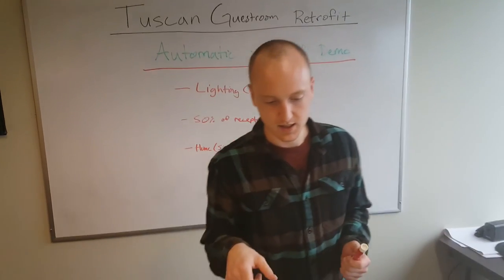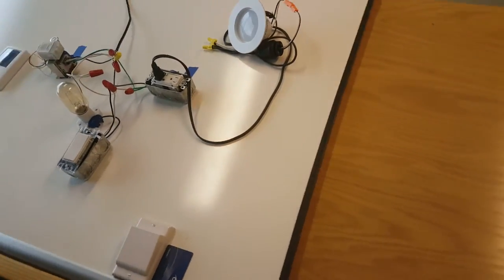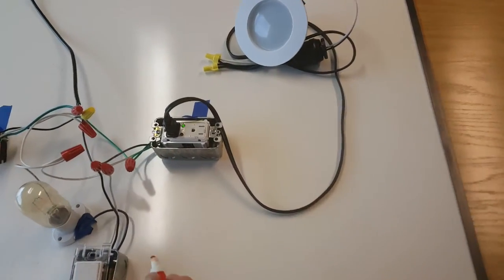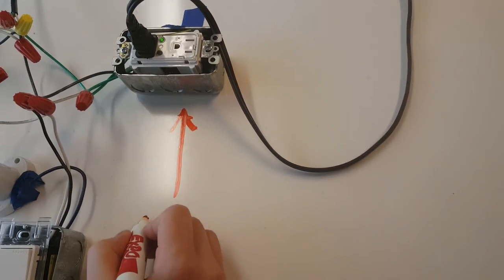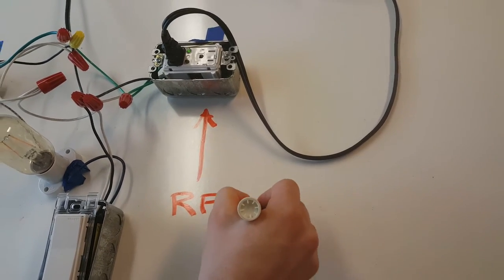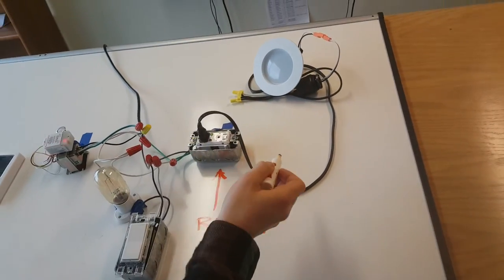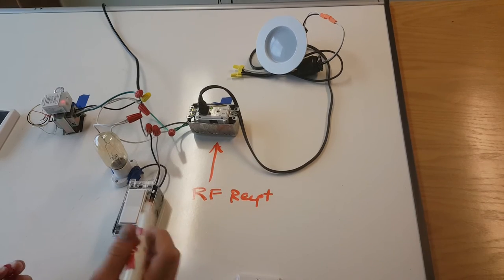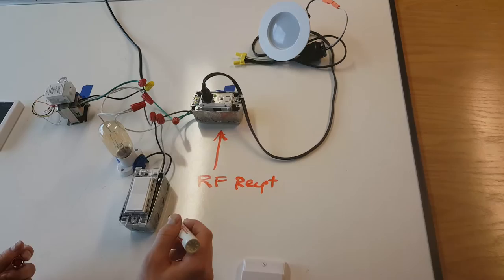So let's take a moment to look at the mock-up. First we have a retrofitted radio frequency receiving receptacle. This is plugged into a desk lamp, a coffee maker, a microwave, stuff that is okay to be shut off when the space is unoccupied.